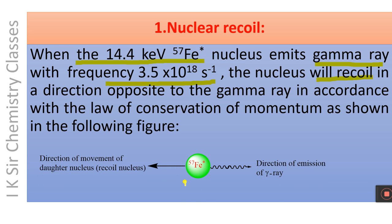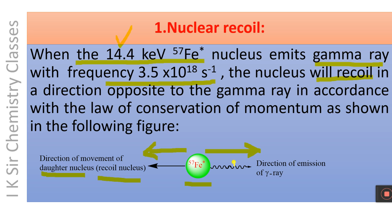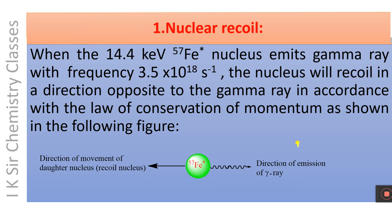This is the excited state nucleus of Fe-57 with energy 14.4 keV. It emits gamma radiation in one direction. Then, according to the law of conservation of momentum, the daughter nucleus — or recoil nucleus — will move in a direction opposite to the direction of the gamma ray.